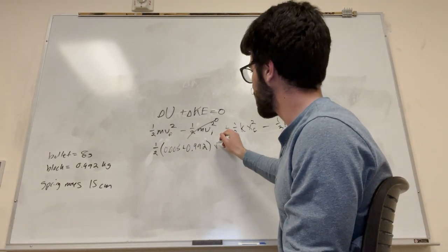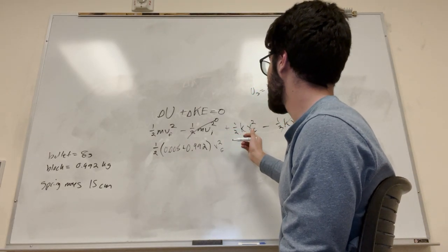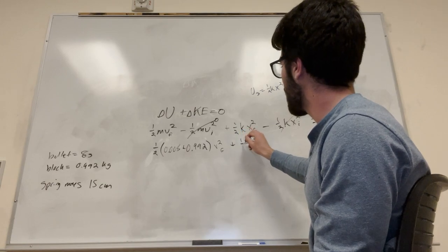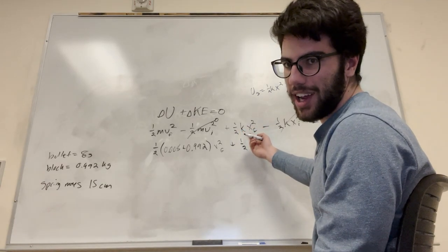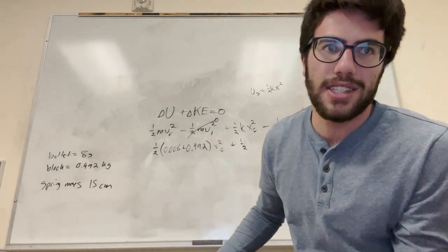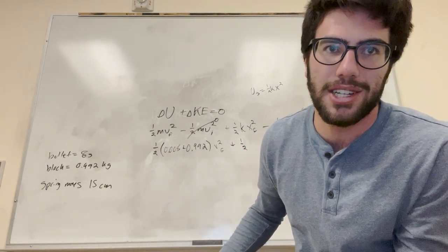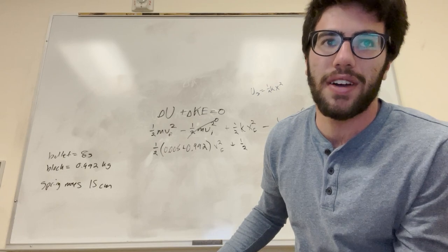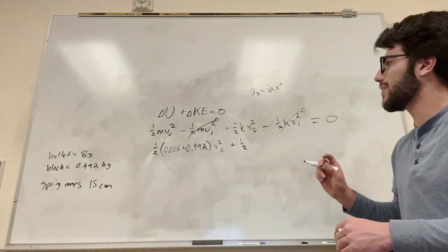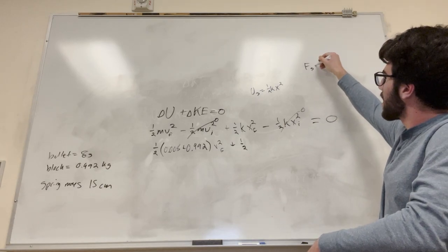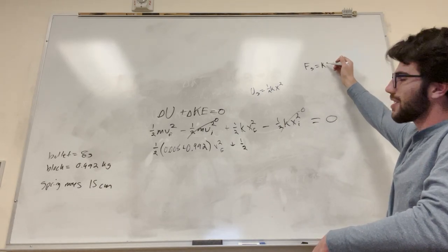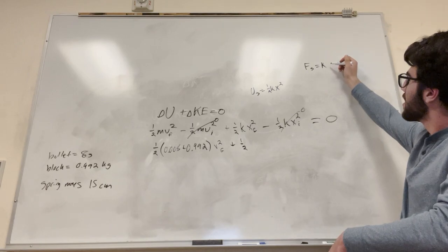So velocity final is what we want. And then plus one-half. We need the spring constant, right? And luckily it gives us this thing here. This calibration of the spring shows that the force of 0.75 newtons is required to press the spring 0.25 centimeters. Another thing we have, the force of spring is equal to the spring constant times the delta x.